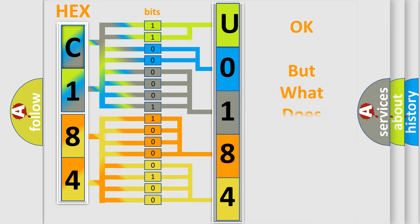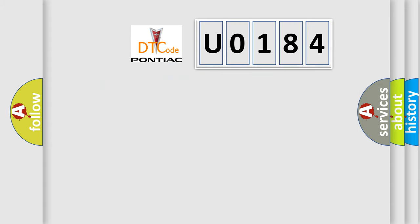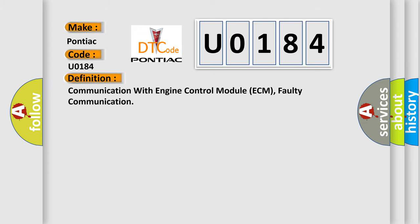We now know how the diagnostic tool translates the received information into a more comprehensible format. The number itself does not make sense if we cannot assign information about what it actually expresses. So, what does the diagnostic trouble code U0184 interpret specifically for Pontiac car manufacturers? The basic definition is: Communication with Engine Control Module ECM — faulty communication.